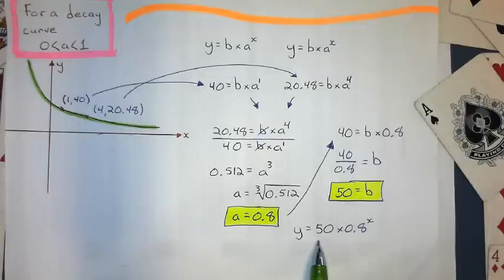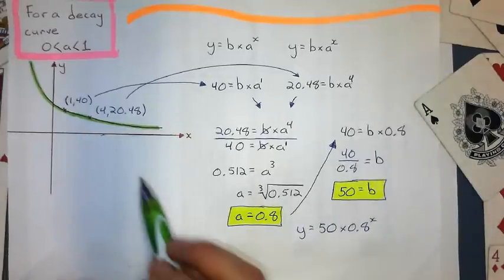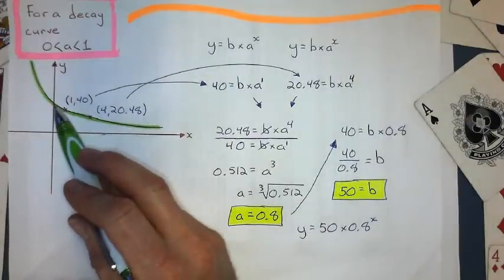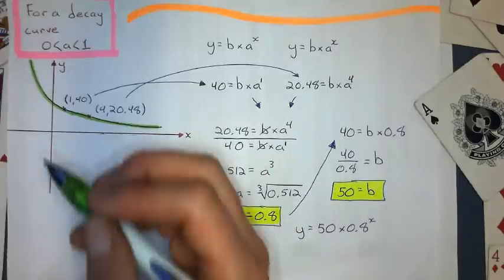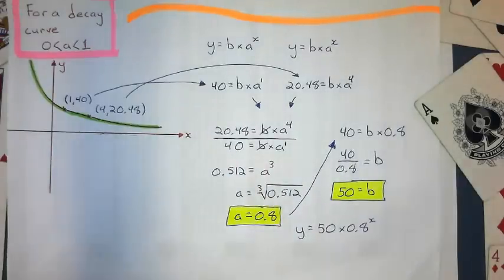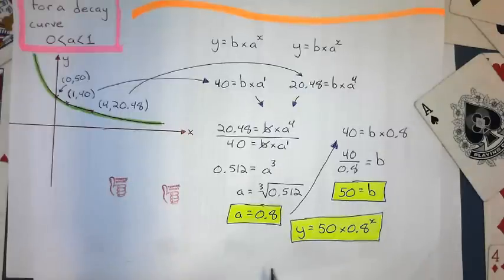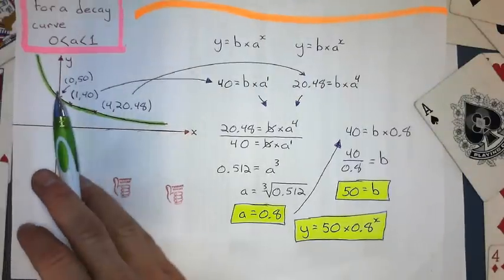And I check that. So that means my y intercept way up here would be 0.50. And that's it. And that's how you get the equation when you're given two points on the curve, and you don't have the y intercept.